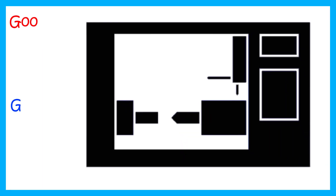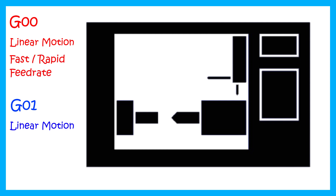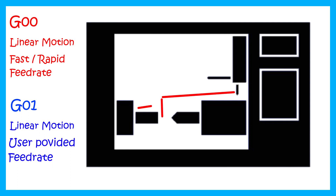Both G00 and G01 are used for linear motion, but the basic difference is that when G00 is used the tool will move fast, but when G01 is used the tool will move with a controlled feed rate programmed by the programmer. So while non-productive motions such as approaching the workpiece, taking depth of cut, or retracting away from the workpiece, we can use G00 to reduce the overall cycle time and make the process more productive. But while cutting linearly, we have no other option except tool motion with a controlled feed rate, that is using code G01.